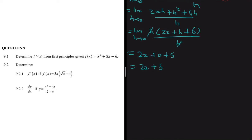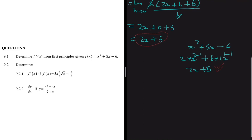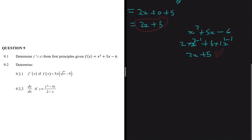To verify this, we can use the power rule on x² + 5x - 6. Applying the power rule gives 2 times x to the (2 - 1) plus 5 times 1 times x to the (1 - 1), and the constant 6 disappears. So we get 2x + 5, confirming our first-principles answer is correct.